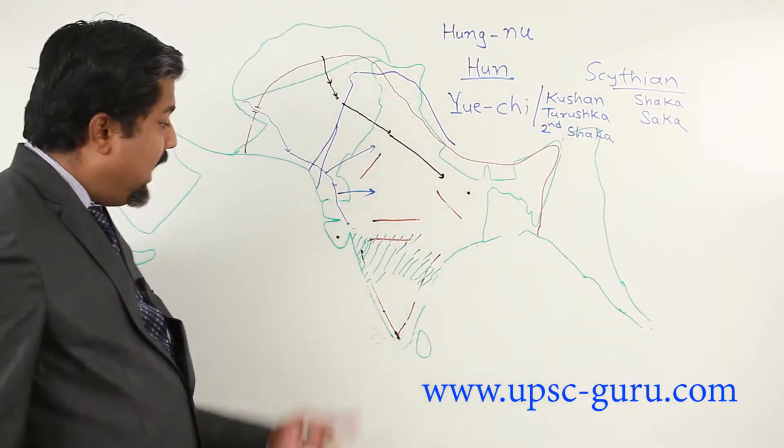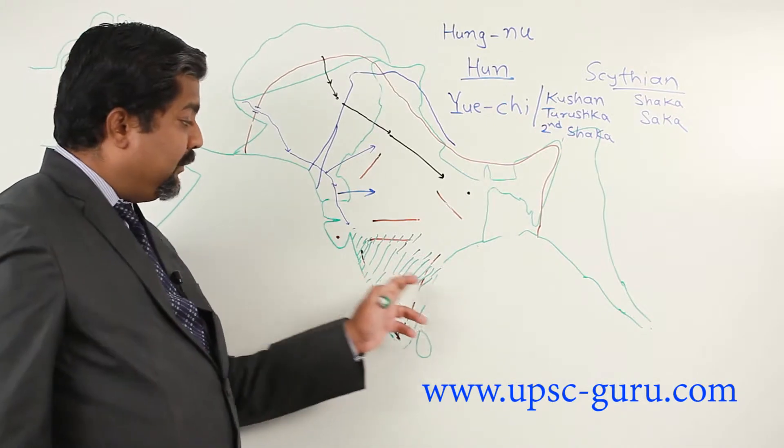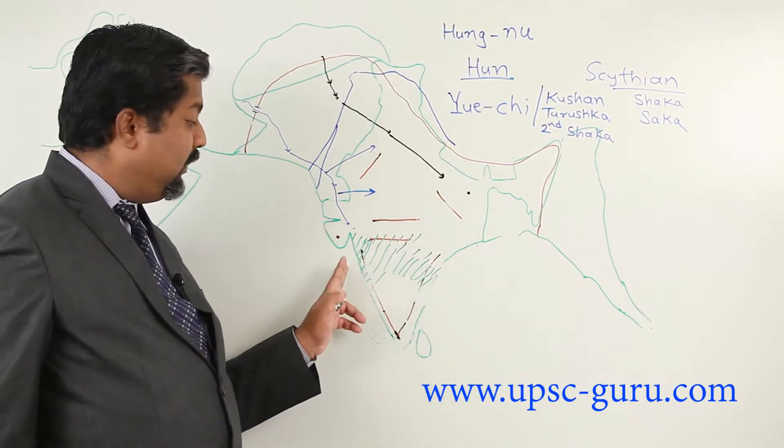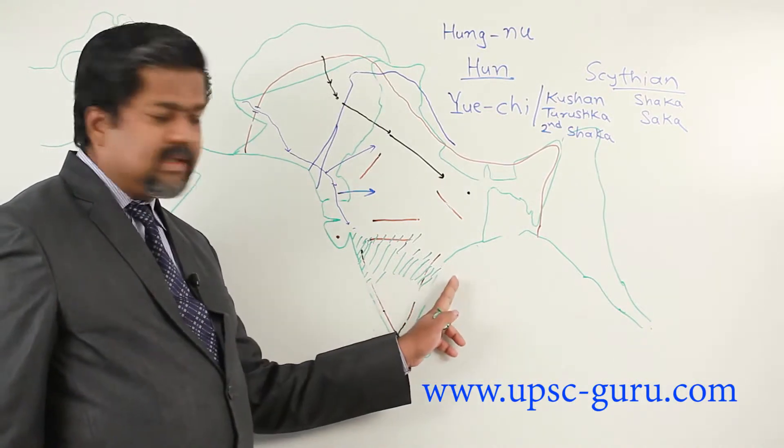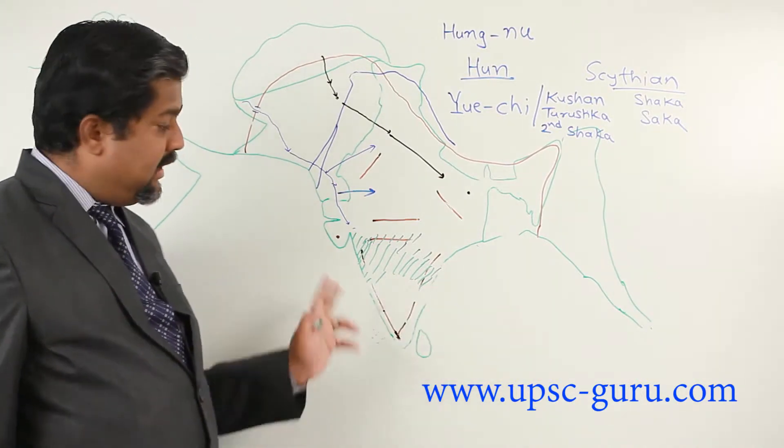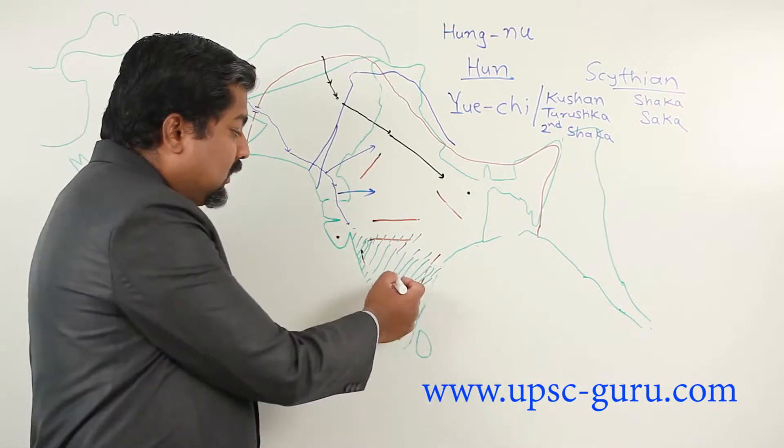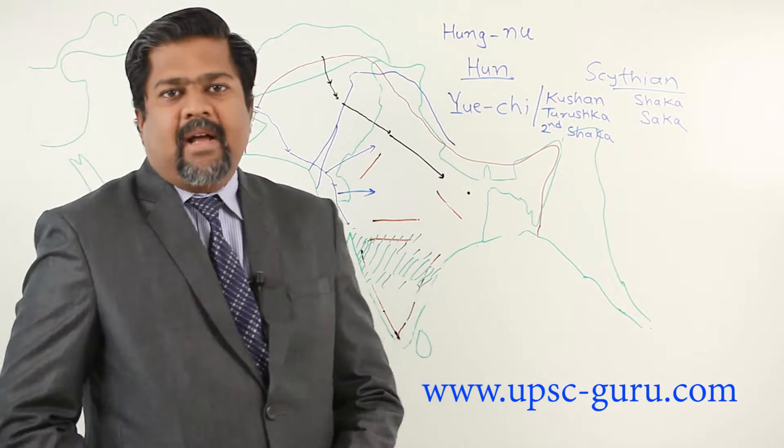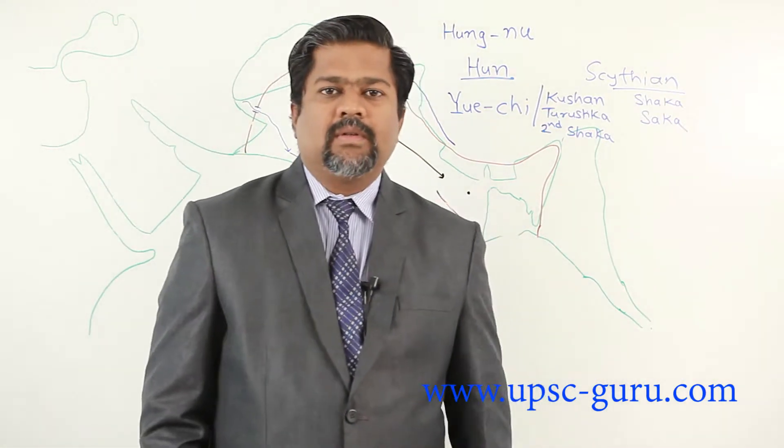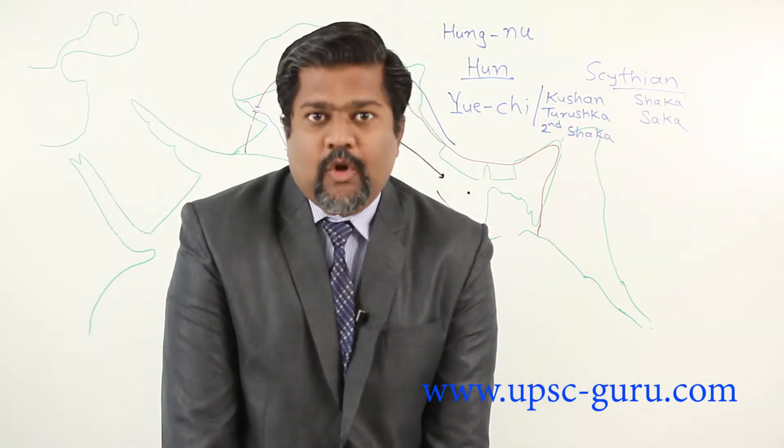The Satavahana empire was considered a vast empire ranging from the western sea, Sindusagar, to the eastern Gangasagar. In between was the Satavahana empire, which flourished because of trade.